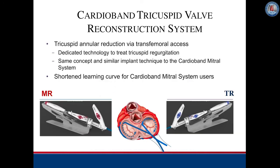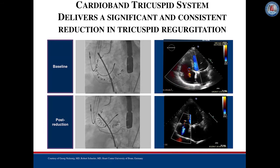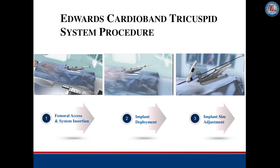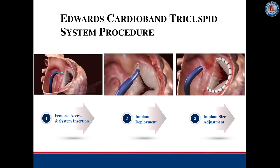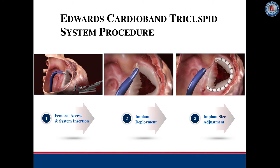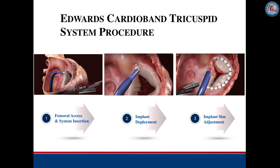The Cardioband tricuspid system will be quite familiar to those using the Cardioband for the mitral valve. It is very similar, using the same concepts and transesophageal echo guidance, but is modified modestly. After the Cardioband is anchored in place, it is cinched for optimal TR reduction as demonstrated in these video loops. When treating the tricuspid valve, the system is again accessed via the femoral vein and implanted from commissure to commissure anteriorly, then finally cinched under transesophageal echo guidance.